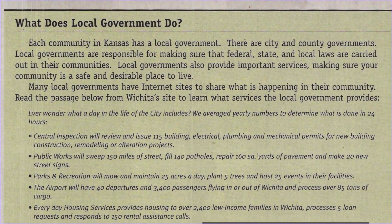What does local government do? Each community in Kansas has a local government. There are city and county governments. Local governments are responsible for making sure that federal, state, and local laws are carried out in their communities. Local governments also provide important services, making sure your community is safe and a desirable place to live. Many local governments have internet sites to share what is happening in their community. Read the passage below from Wichita's site to learn what services the local government provides.